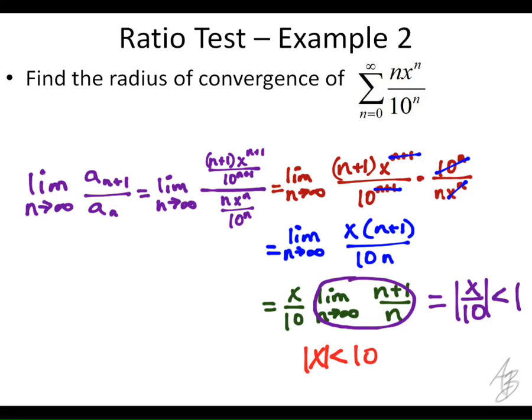Now, the question, or the problem says, find the radius of convergence. The radius is actually the size of the convergent interval. So if the absolute value of x has to be less than 10, what's the radius of this interval here?